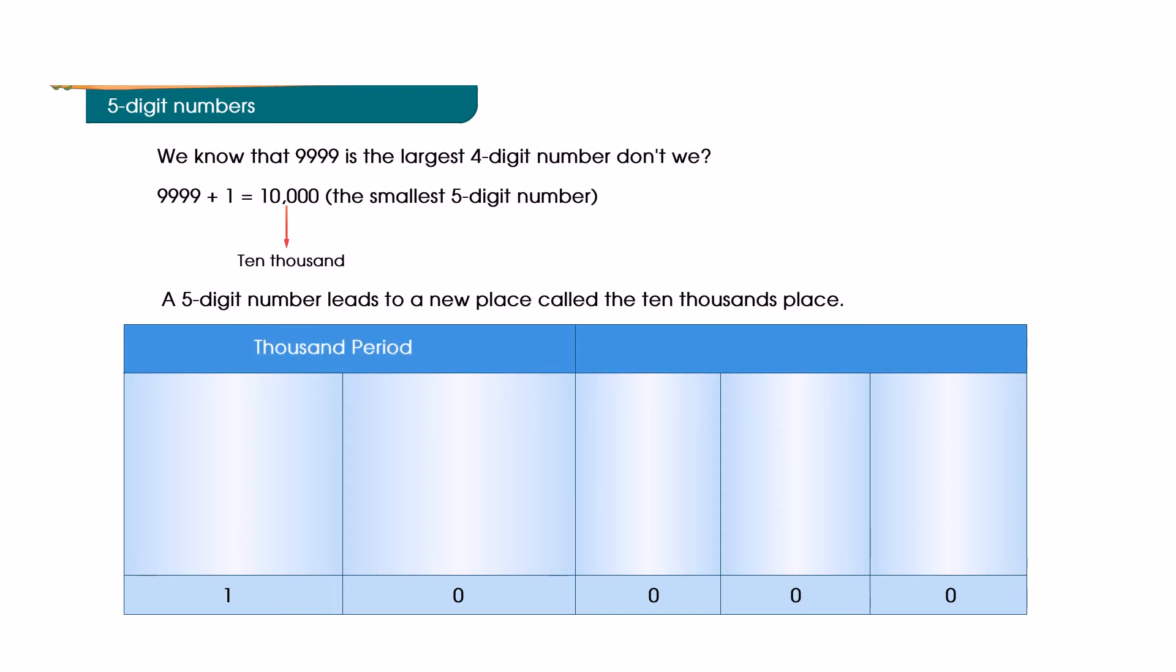A 5-digit number leads to a new place called the ten-thousands place. Thousand Period Ones Period: Ten-thousands, Thousands, Hundreds, Tens, Ones.